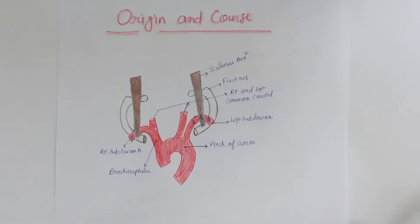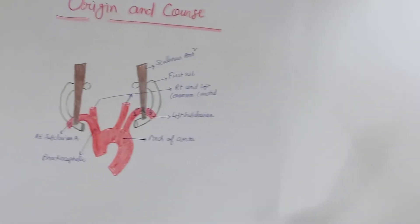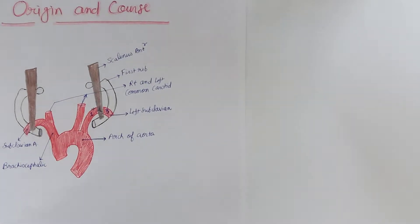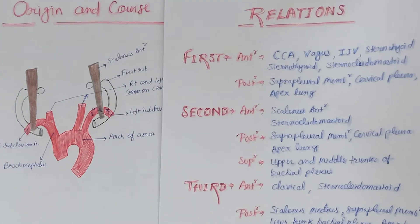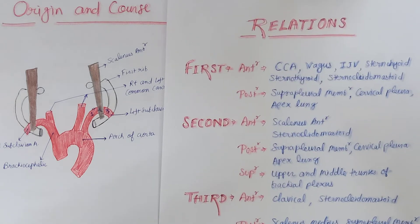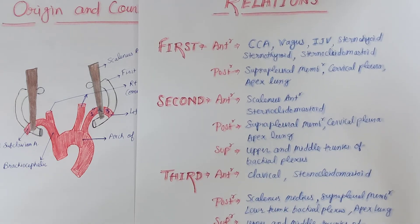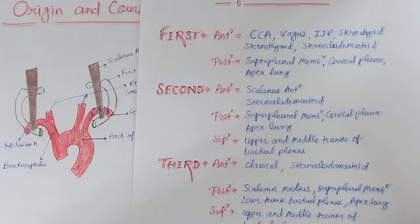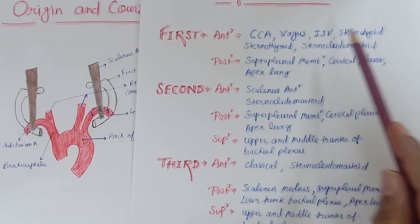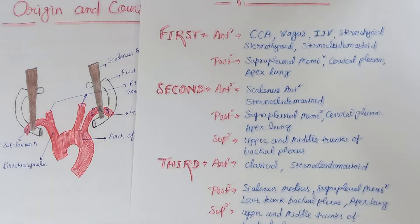Relations of the first part of the subclavian artery: anteriorly, it is related to the common carotid artery, vagus nerve, internal jugular vein, sternohyoid, and sternocleidomastoid. Posteriorly, it is related to the suprapleural membrane, cervical pleura, and apex of the lung.